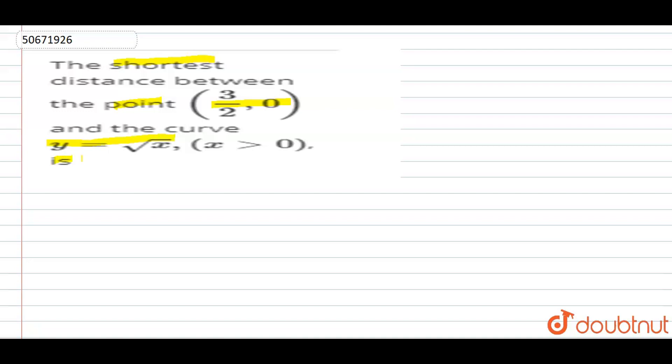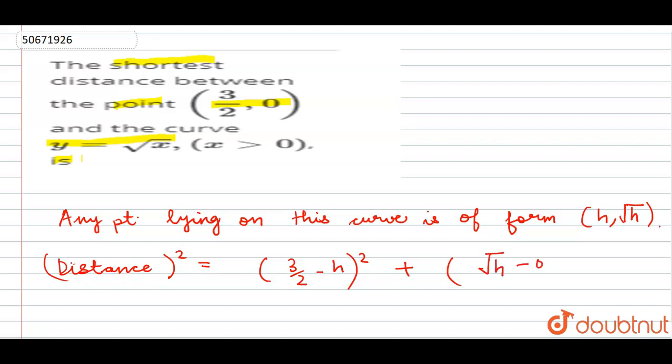So for this, let us suppose a point is lying on the curve. Any point lying on this curve is of the form (h, √h). Now we apply the distance formula between the two points. We take distance squared of the points.